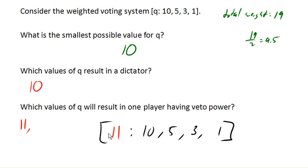How about 12? In order to reach quota, we're still going to need player 1 and at least one other player. So 12 is going to work. How about 13? Now player 1 and player 3 can reach quota, or player 1 and player 2 can reach quota. So at 13, we still only have one player who is absolutely essential.